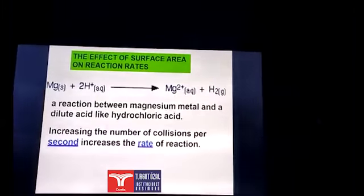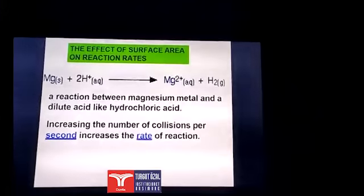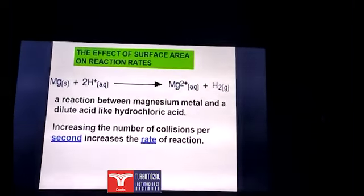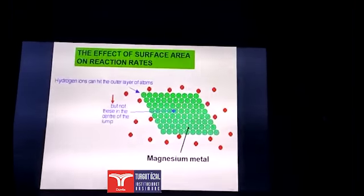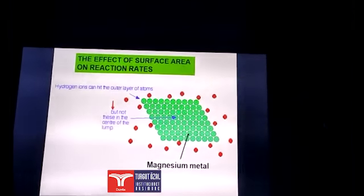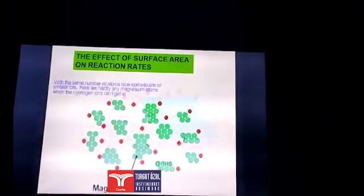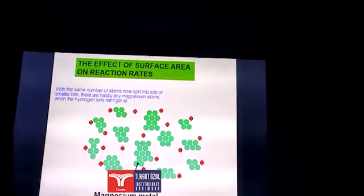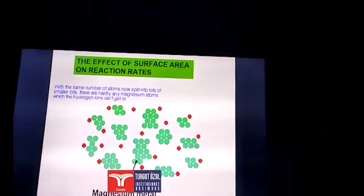We have a reaction here. Magnesium plus hydrogen will give magnesium ion plus hydrogen molecule. A reaction between magnesium metal and a dilute acid like hydrochloric acid. Increasing the number of the collisions per second increases the rate of the reaction. Hydrogen ions can hit the outer layer of the atoms, but not in these in the center of the lump. Where is the magnesium metal? With the same number of atoms now split into lots of smaller bits, there are hardly any magnesium atoms which the hydrogen ions can get at.